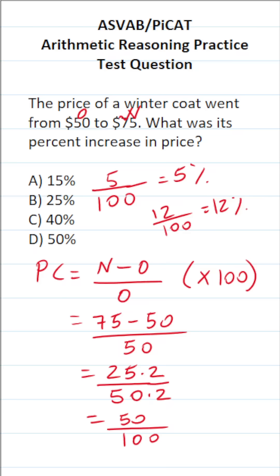50 over 100 as a percent is going to be 50%. So in other words, we know there was D, a 50% increase in its price.